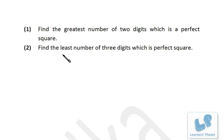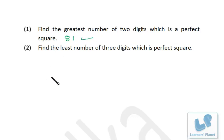Next: find the greatest two-digit perfect square. The square of 9 is 81, and that is the greatest two-digit perfect square, because the square of 10 is 100, which has three digits. Similarly, the least three-digit perfect square is 100 itself, since 100 is a perfect square.